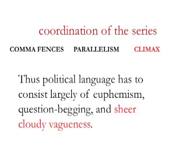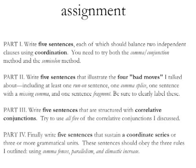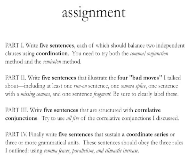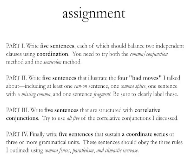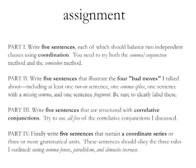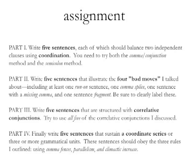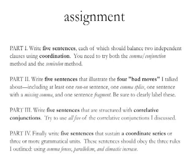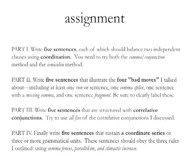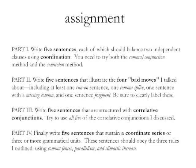Assignment time. For this assignment, you'll write 20 original sentences. For part one, write five sentences that each balance two independent clauses using coordination — try both the comma-conjunction method and the semicolon method. For part two, write five sentences illustrating the four bad moves: at least one run-on sentence, one comma splice, one sentence with a missing comma, and one sentence fragment — clearly label all of these. For part three, write five sentences structured with correlative conjunctions, trying to use all five correlative conjunctions discussed. For part four, write five sentences that sustain a coordinate series of three or more grammatical units, obeying the three rules: comma fences, parallelism, and climactic increase. Print out a copy and bring it to class — I'll take it up unannounced. Our next lesson will discuss subordination in greater detail. Till then, good luck.